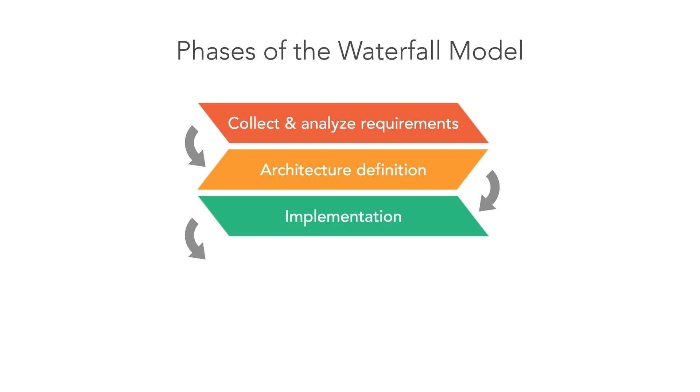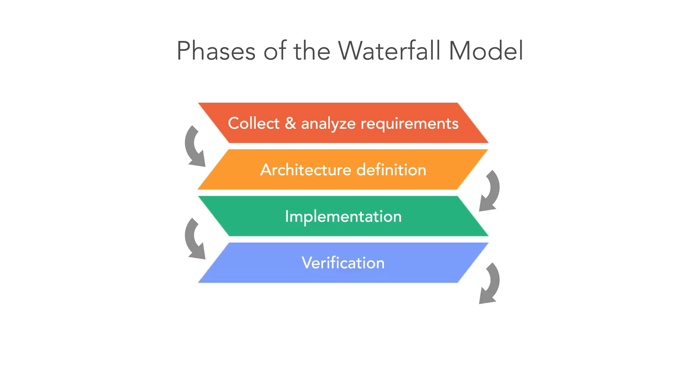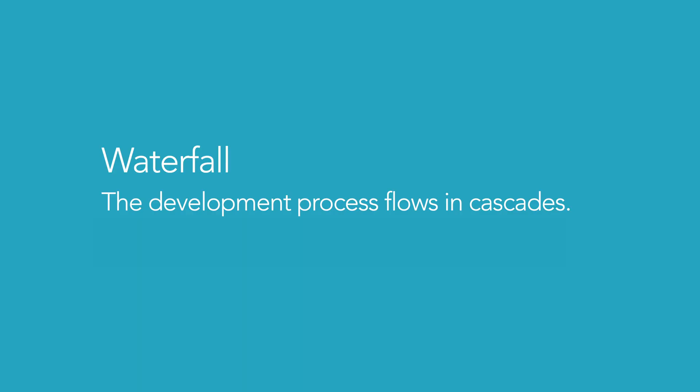The waterfall is a linear model. It defines development steps or phases. You start executing one step, complete it, and then start the next one. This approach gives us a steady, downward order — hence the name waterfall. The development process flows in cascades.